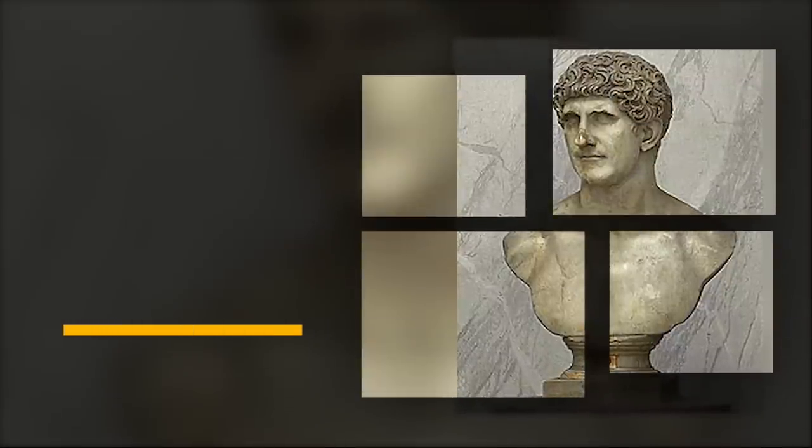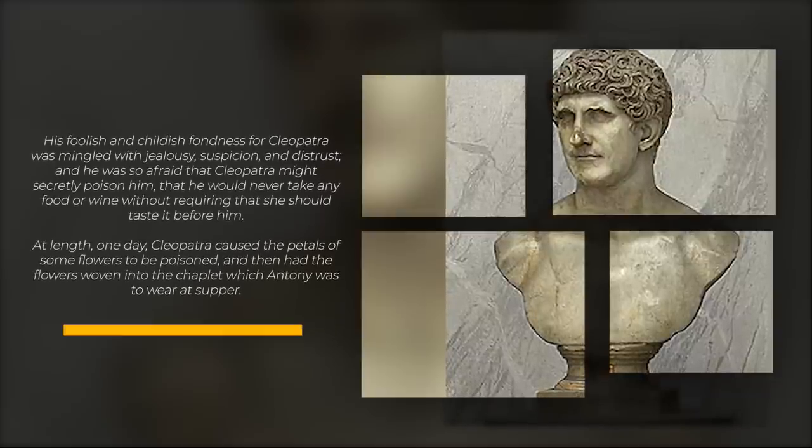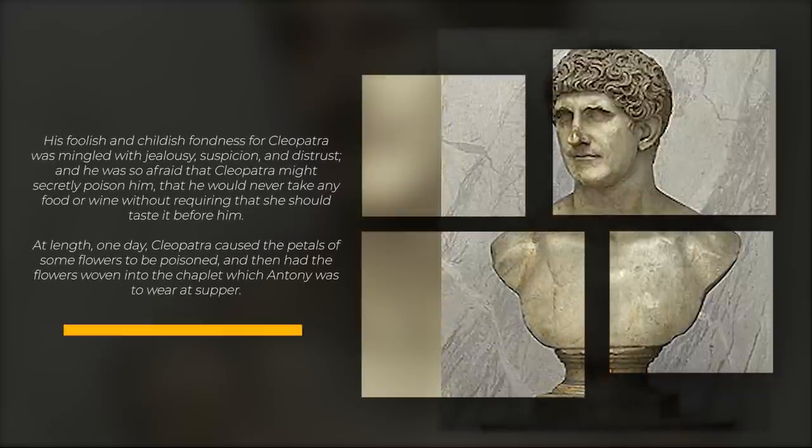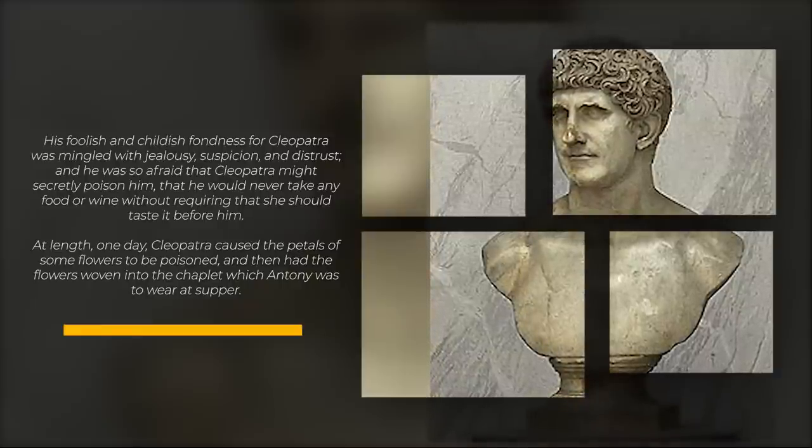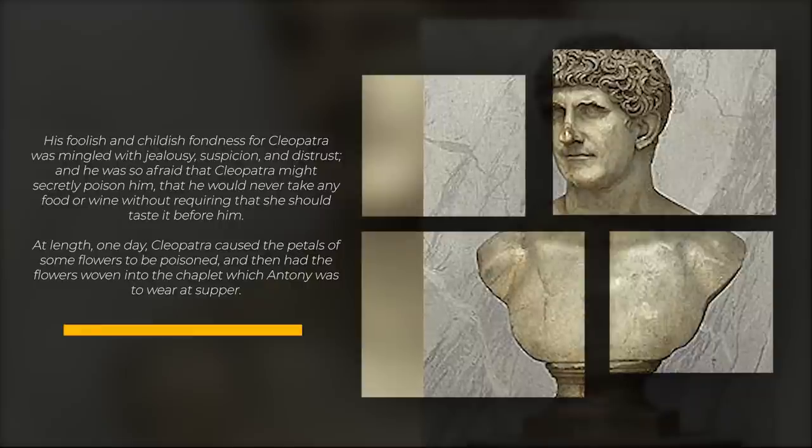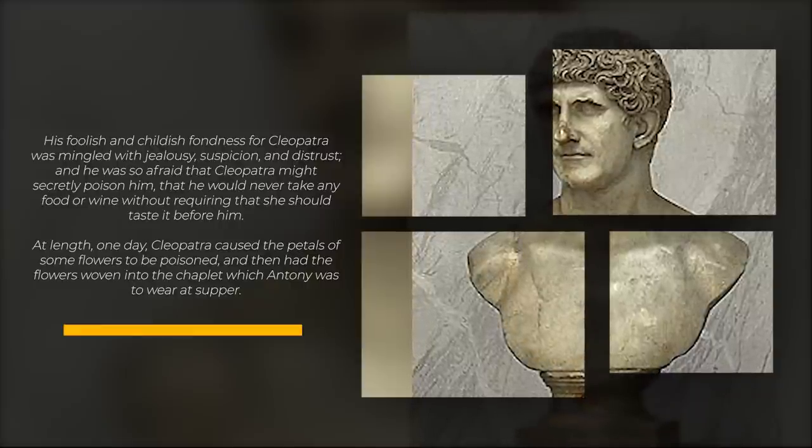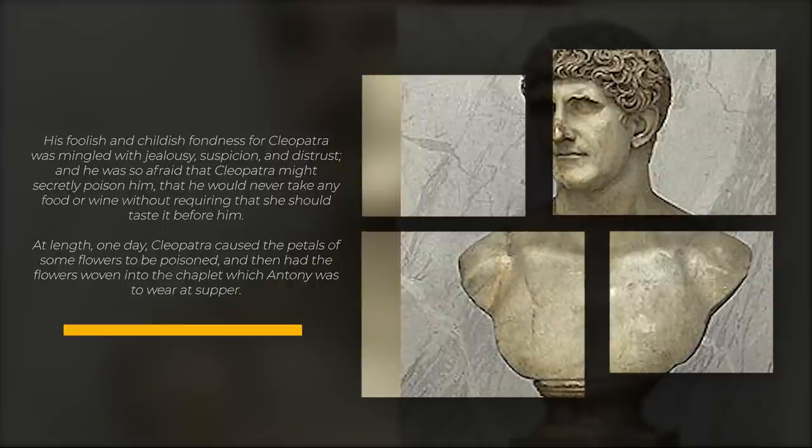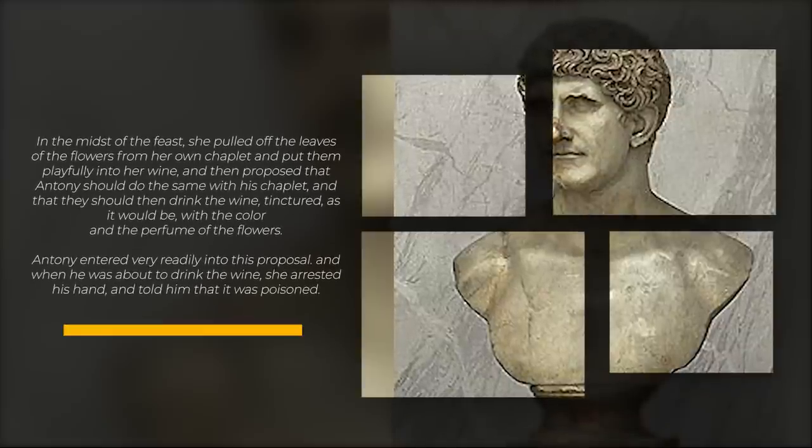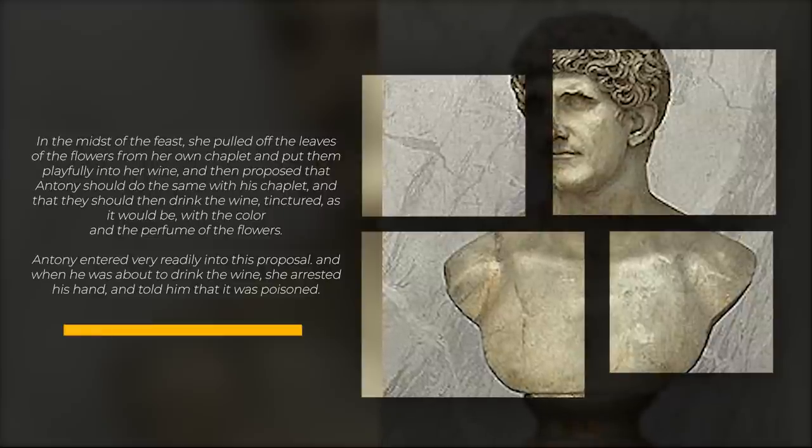One such infamous story about food testing talks about Mark Anthony, Cleopatra's husband. The story goes: his foolish and childish fondness for Cleopatra was mingled with jealousy, suspicion, and distrust, and he was so afraid that Cleopatra might secretly poison him that he would never take any food or wine without requiring that she would taste it before him. At length one day, Cleopatra caused the petals of some flowers to be poisoned and then had the flowers woven into the chaplet which Anthony was to wear at supper.